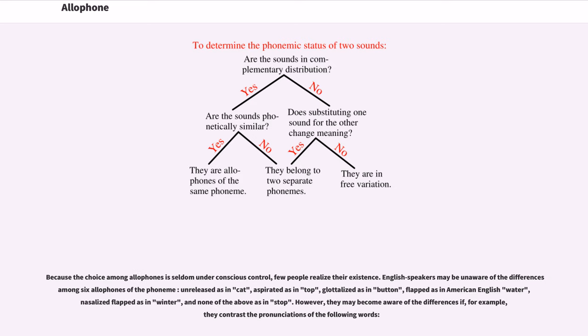Because the choice among allophones is seldom under conscious control, few people realize their existence. English speakers may be unaware of the difference among six allophones of the phoneme t: unreleased as in cat, aspirated as in top, glottalized as in button, flapped as in American English water, nasalized flapped as in winter, and none of the above as in stop. However, they may become aware of the differences if, for example, they contrast the pronunciations of the following words.